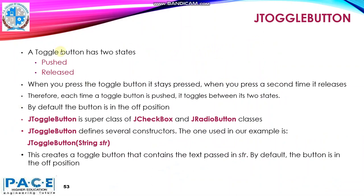A toggle button has two states: pushed state and released state. When you press the toggle button, it stays pressed. When you press a second time, it is released. Therefore, each time a toggle button is pushed, it toggles between its two states. By default, the button is in the off position.